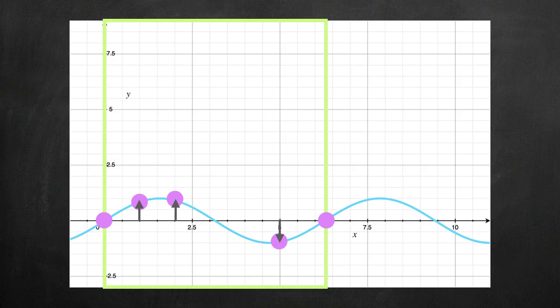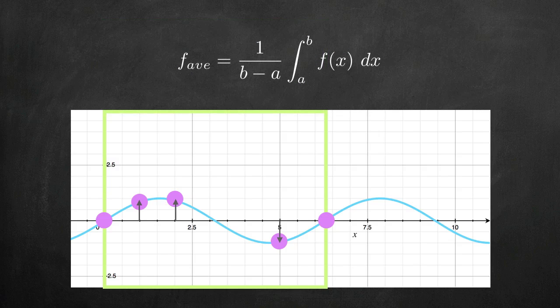I won't take you through the proof today, but if we write a formula to test the function at not 5, not 500, not 5000, but infinite values of x, we get this formula for the average value of a function on the interval x equals a to x equals b.